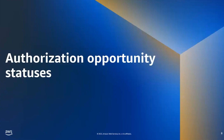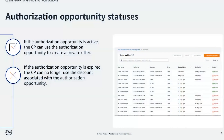Now that we understand where to view authorization opportunities, we'll cover authorization opportunity statuses — how to view them and what they mean. When viewing an authorization opportunity in the AWS Marketplace Management Portal, the seller will see a status column. In that column, each authorization opportunity will show as either active or expired.